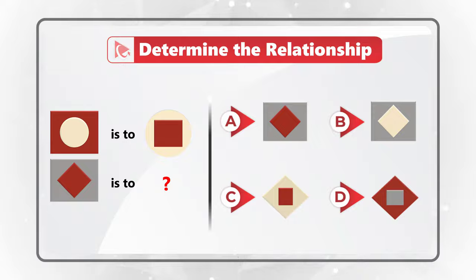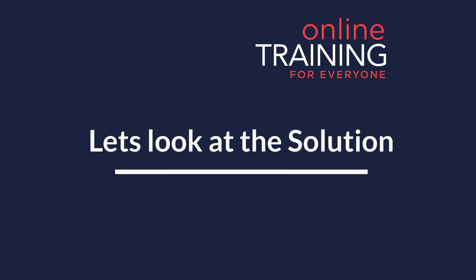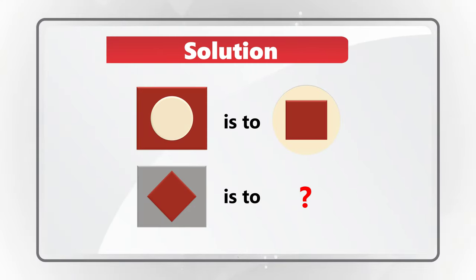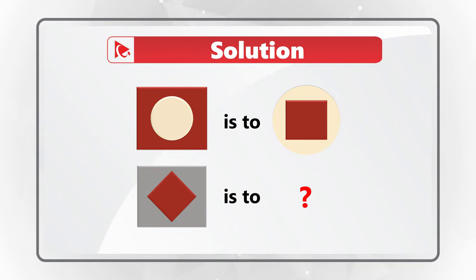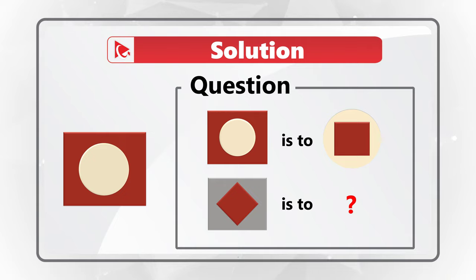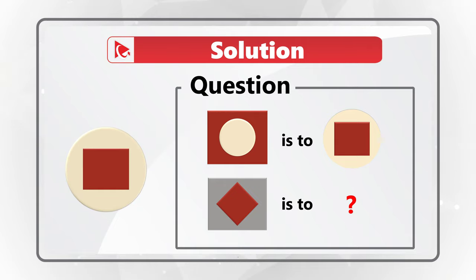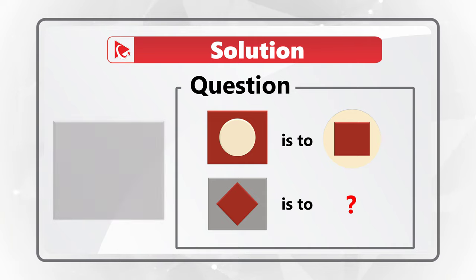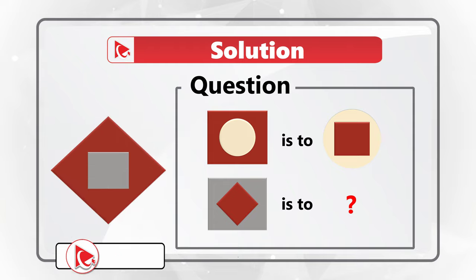The key to determine the relationship is to look for patterns. In this example, the inner object increases in size to become the background element for the next object. At the same time, the outer element reduces to become the inner object for the final shape. In addition, objects preserve their colors when changing sizes.